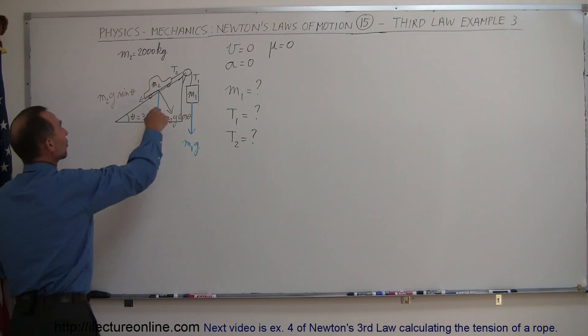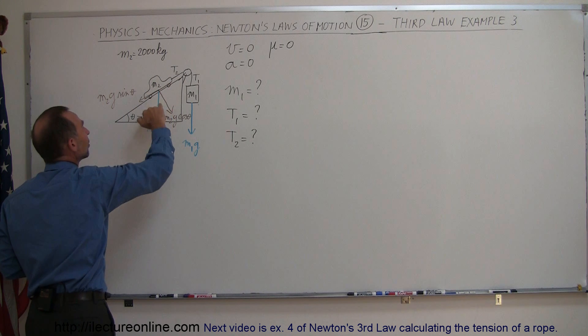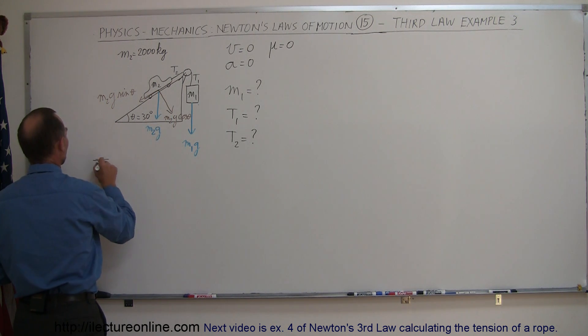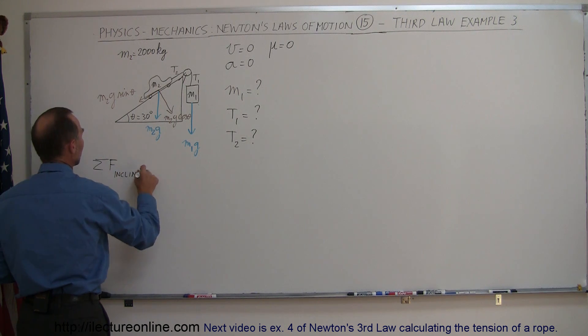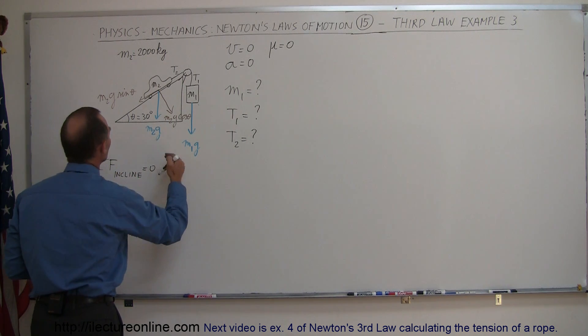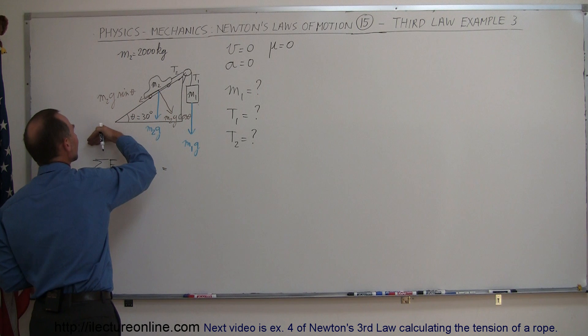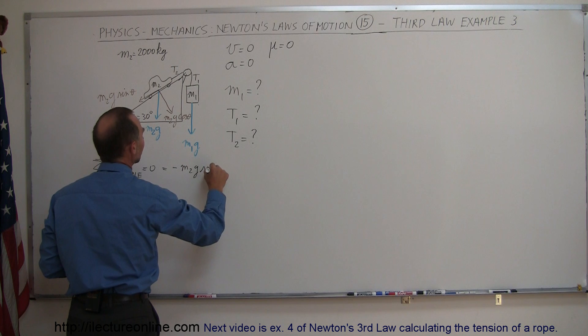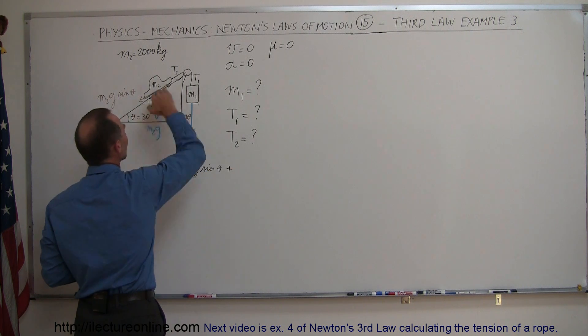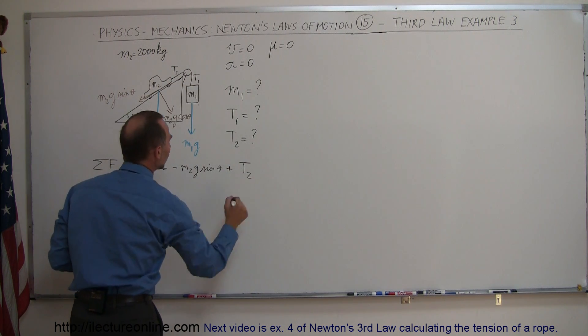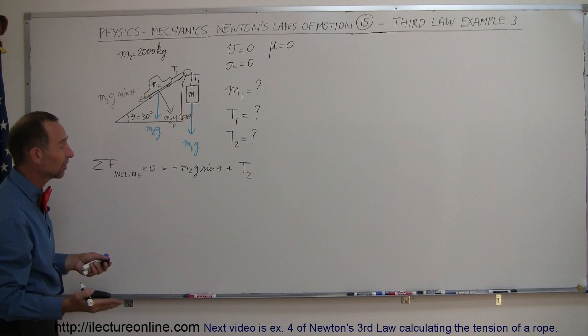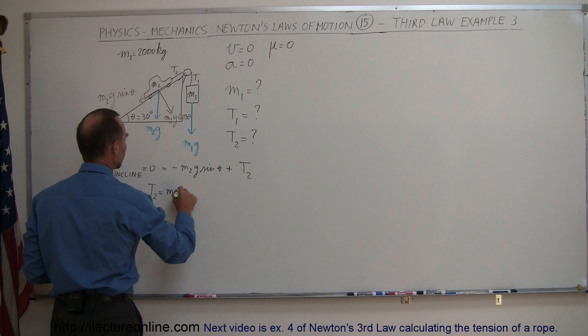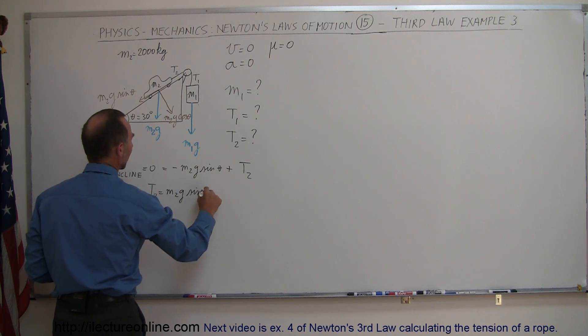that the sum of the forces on M2 in this direction must add up to zero. So we can say that the sum of the forces on the incline must equal zero, which is equal to, we have the M2G sine theta downward, so we can call that negative, negative M2G sine theta plus tension 2 upward. When they add the two together, they should add up to zero. In other words, we can say that T2 is equal to M2G sine of theta.